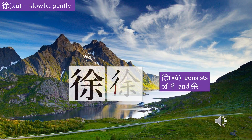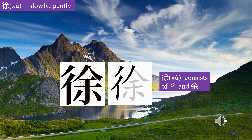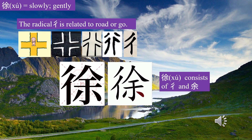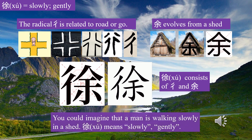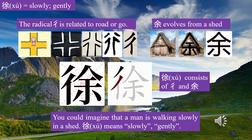Character 徐 (Xú) consists of two parts. The radical 彳 (Xíng Zì Páng) is related to road or goal. 徐 evolves from a shed. You could imagine that a man is walking slowly in a shed. 徐 means slowly, gently.